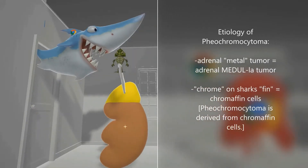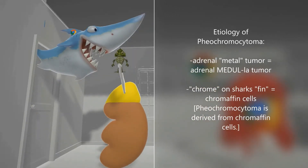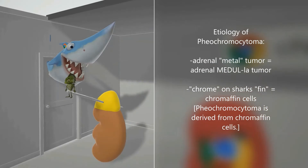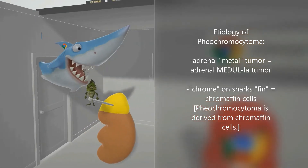If you take a look over here, you might notice this kidney — we're not so interested in the kidney, we're interested in what's on top of it: the adrenal gland. Out of the adrenal gland there's a metal bar representing the adrenal medulla. Pheochromocytoma is the most common tumor of the adrenal medulla in adults, and that's why we have this tumor guy hanging out on top of that metal.